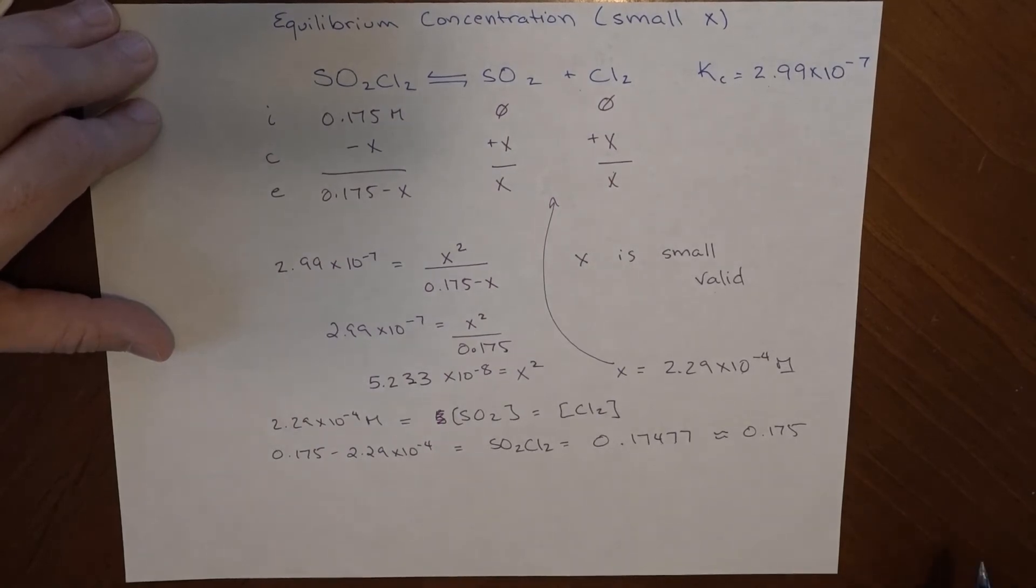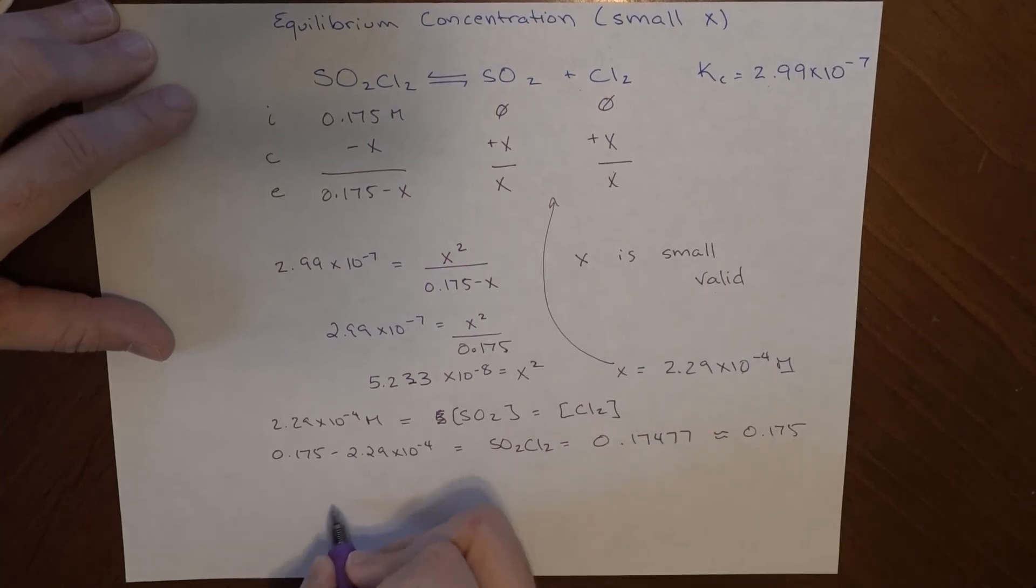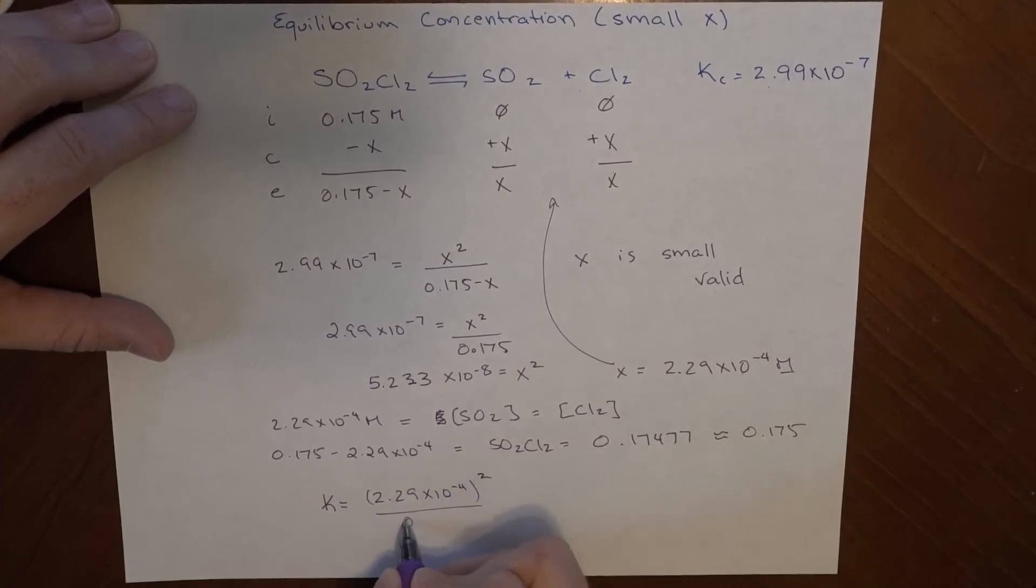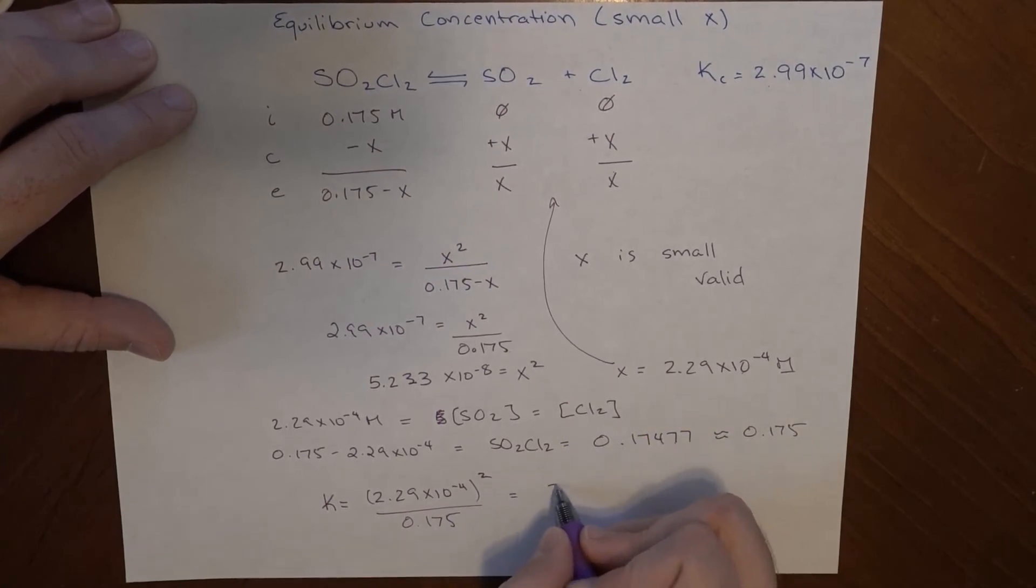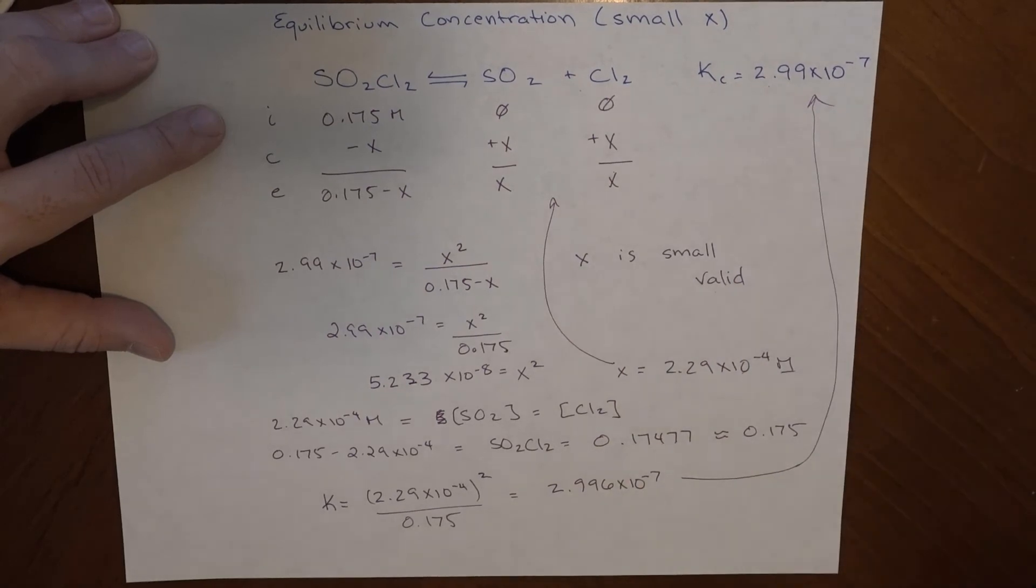So things are looking okay. Now if I plug this into my... If I try and calculate this, I should get that number. So k is going to be equal to 2.29 times 10 to the minus 4 squared over 0.175. And when I plug that in to my calculator, I get 2.996 times 10 to the minus 7, which is effectively that. So this small x approximation worked out in my favor.